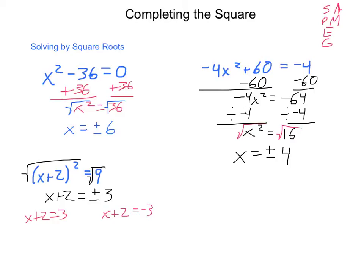Solving these independently: subtract 2 from each side, I end up with x equals 1. On the other one, subtract 2, I end up with x equals negative 5. These become my two answers. Typically when we're solving quadratic equations, we are going to have two answers. Very rarely do you have only one, and we will run into situations where we have none, but we'll discuss that when we get to it.